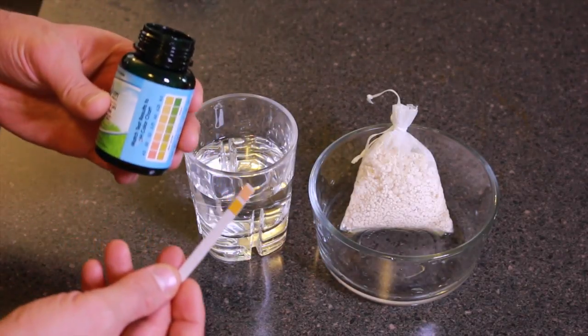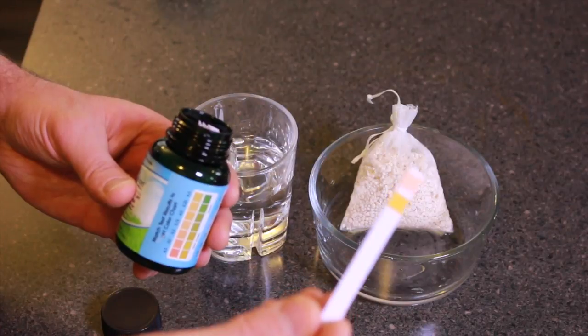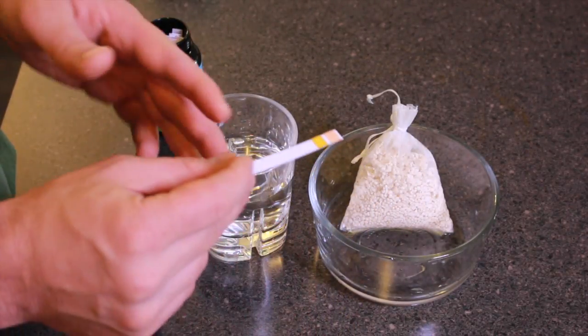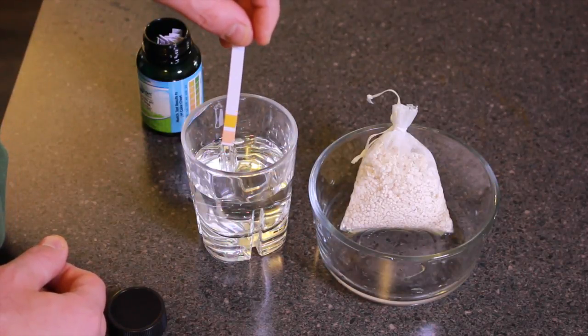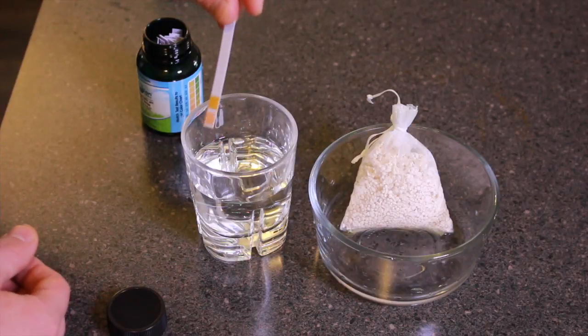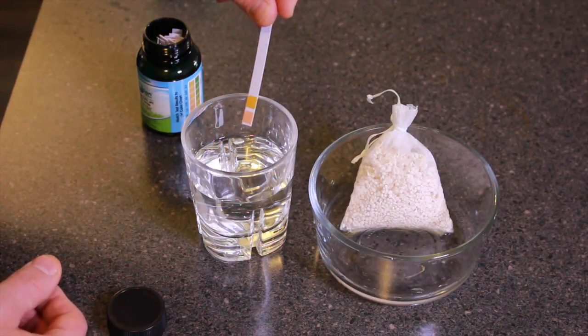These are very good strips to have at home. You can check the pH level of your body by simply using one of these strips in the bathroom and checking the pH level of your urine. Your urine pH level is a good indicator of the level of your pH in your body. So what we'll do is just dip this into this water for a few seconds and we'll take it out.